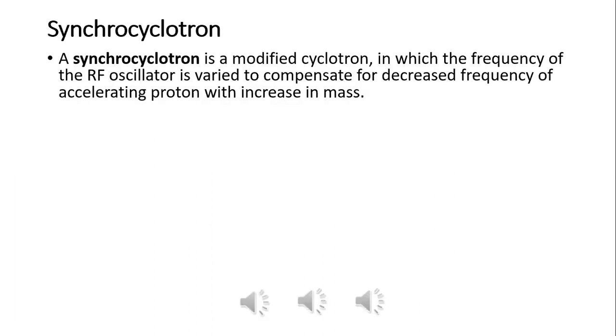A synchrocyclotron is a modified form of cyclotron in which the frequency of the accelerator is varied to compensate for decreased frequency of accelerating proton with increase in mass. This addresses the cyclotron drawback when the speed of the particle increases and the mass increases.